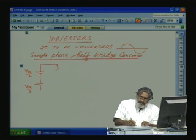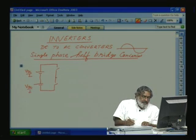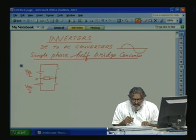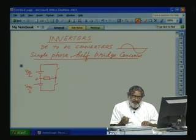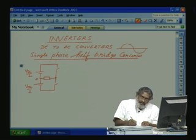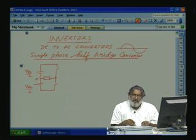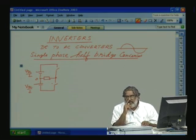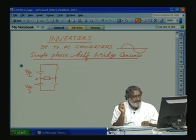This is our switch. Here is the central point where we connect the load. Let us consider this is a resistive load. Our switch — whenever we give a control pulse or gate pulse, the switch is immediately on; when the gate pulse is removed, the switch is off. Such switches can be realized using transistors, MOSFETs, or IGBTs.